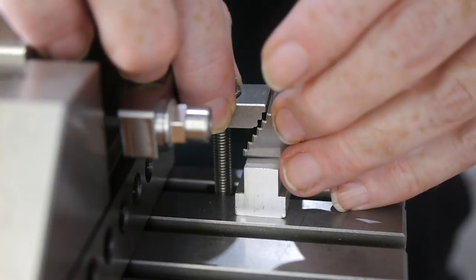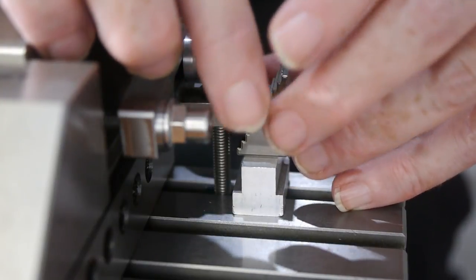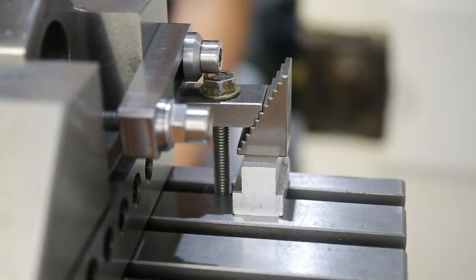I worked around this by using a T-slot nut to raise the step block up, so it could be located further from the vice, clear of the clamping rod.